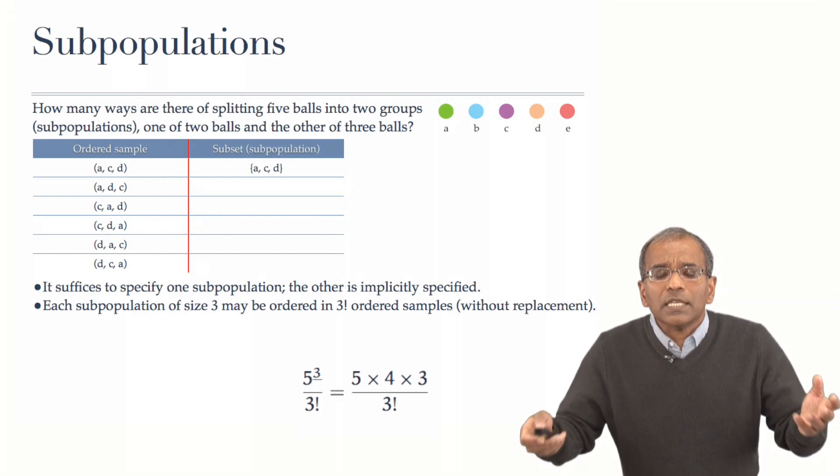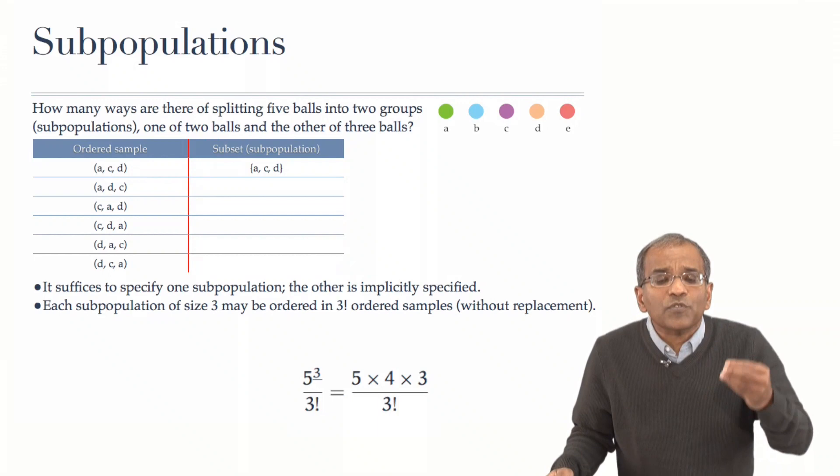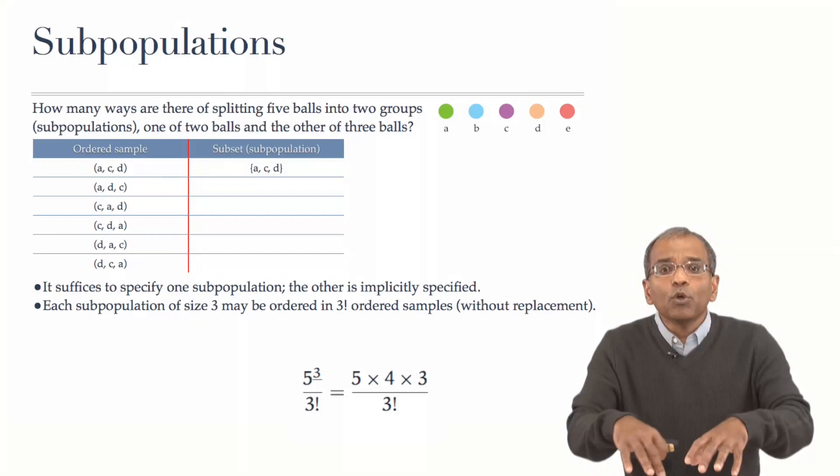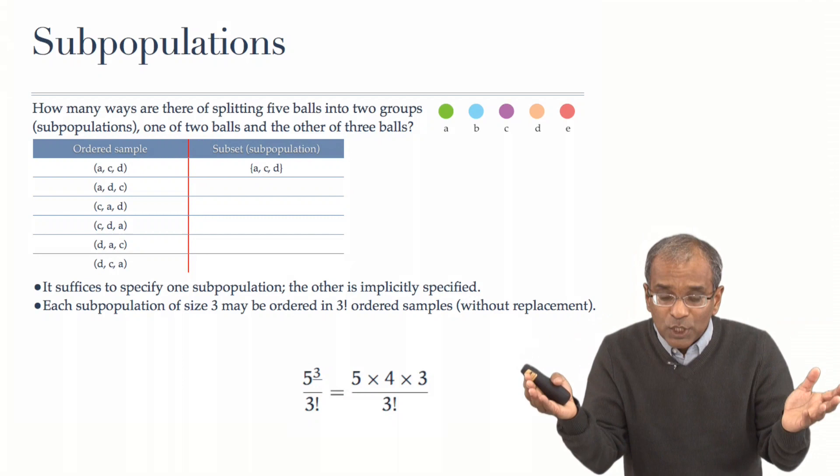Very good. If that is the case, then very simply, the number of distinguished subpopulations of size three from the population of size five is obtained first by looking at all possible ordered samples of size three without replacement.